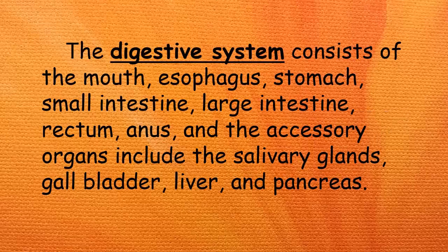The digestive system consists of the mouth, esophagus, stomach, small intestine, large intestine, rectum, and anus. The accessory organs include the salivary glands, gallbladder, liver, and pancreas.